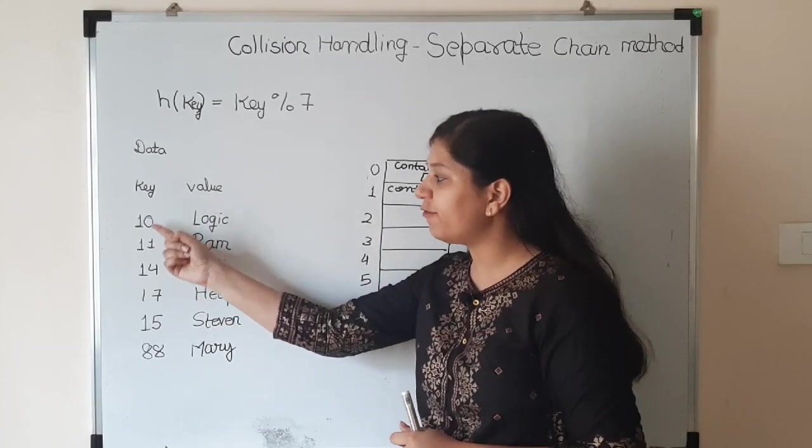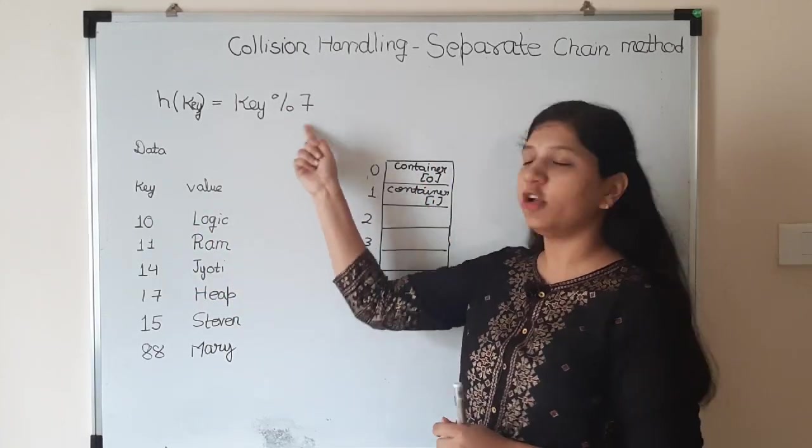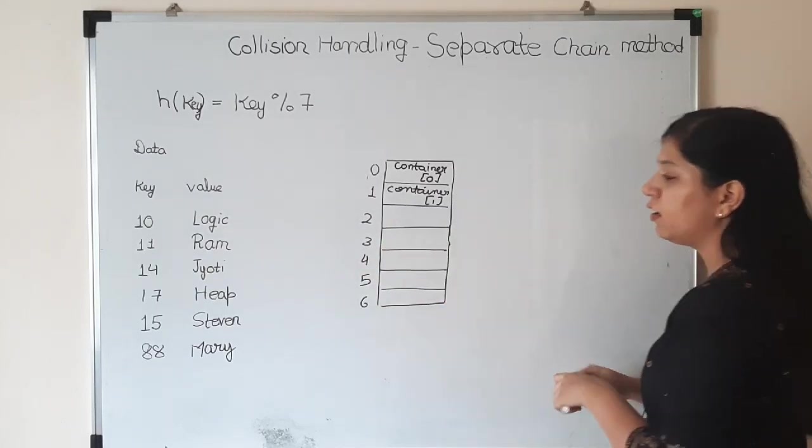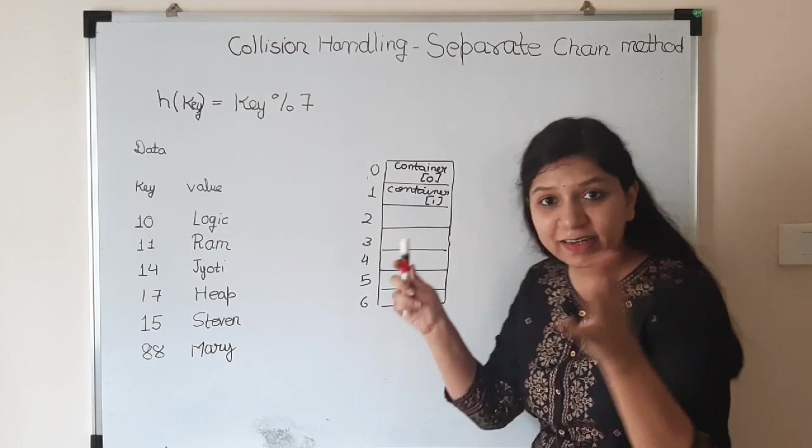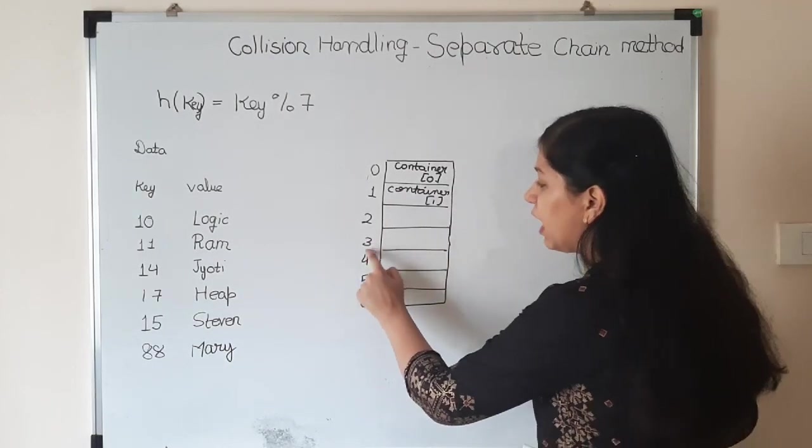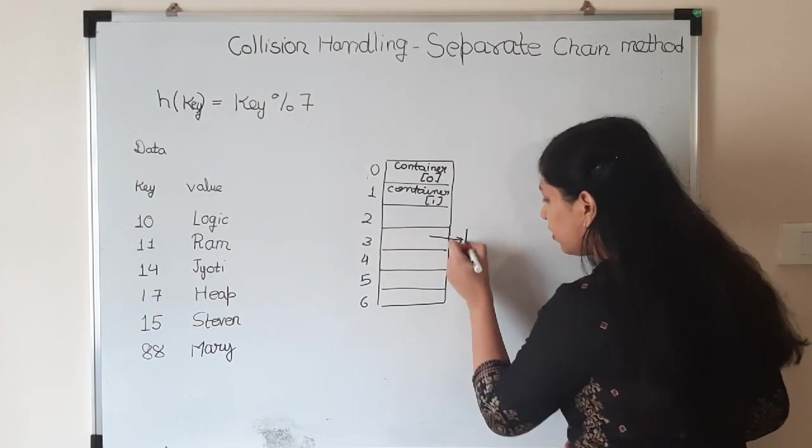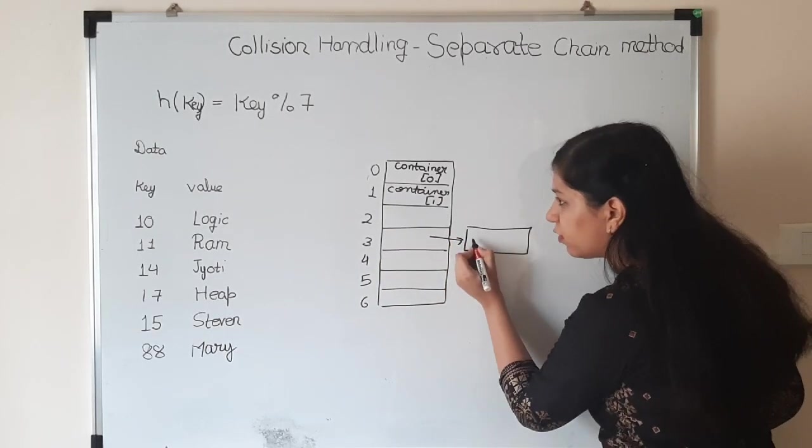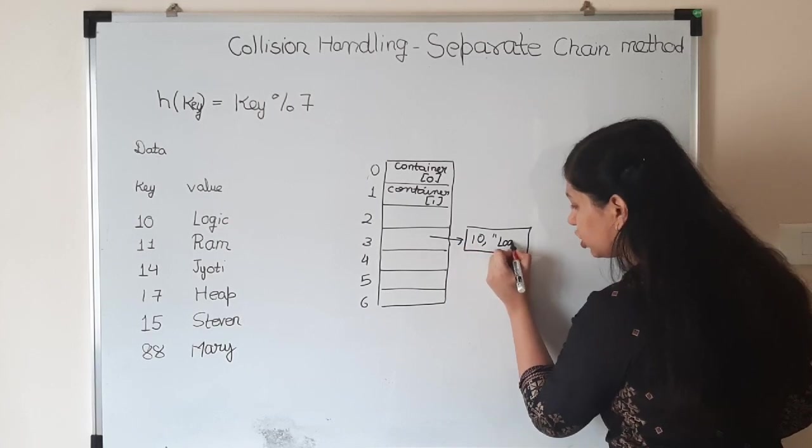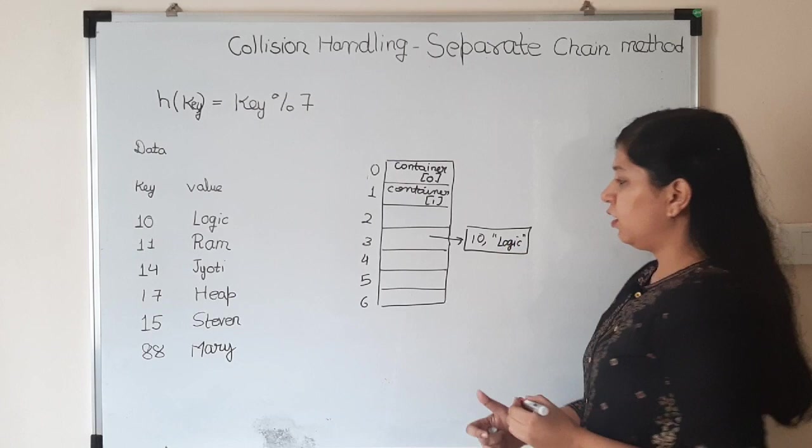Let's take an example. We have 10 and Logic. 10 modulo 7 is 3, so it's going to come here. We maintain a list of all those key value pairs whose keys hash to 3. The first element we'll insert is key 10 and value Logic.